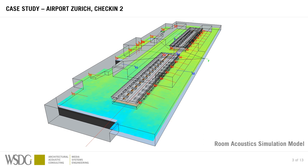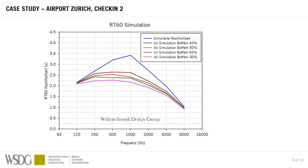We can also simulate the room acoustical surfaces inside the space. As you remember from the first slide, there was a lot of void ceiling space that we're trying to use for acoustical baffles. Baffles are acoustical elements that are hung from the ceiling in a vertical fashion, being exposed to the sound field on both sides — long pieces of absorptive material hung from the ceiling.